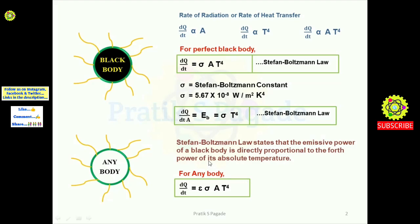For any body, the equation becomes dQ/dt = epsilon × sigma × A × T⁴. We need to add emissivity to the Stefan-Boltzmann law to find the rate of radiation for any body. Here epsilon is the emissivity, and for any body the value of emissivity is between 0 and 1, while for a black body emissivity equals 1.